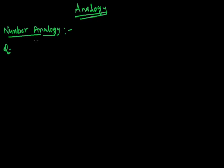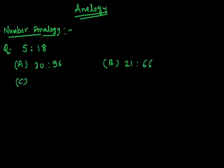This type of question consists of a pair of numbers that have a certain relationship to each other, followed by four other pairs of numbers given as alternatives. Select the pair in which the numbers are similarly related as in the given pair. The given pair is 5, 18. Option A: 30, 96. Option B: 21, 66. Option C: 19, 61. Option D: 11, 35.